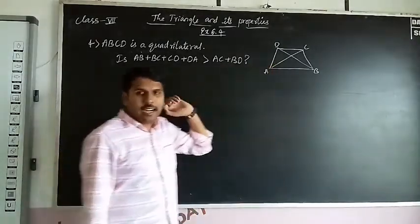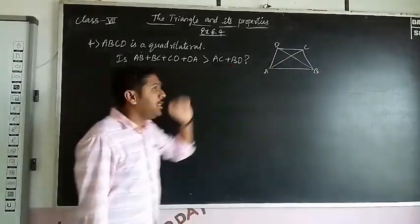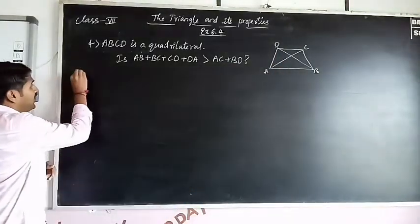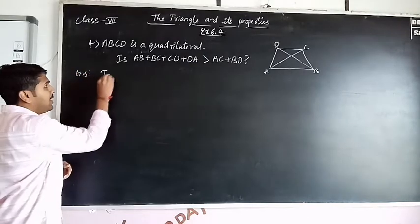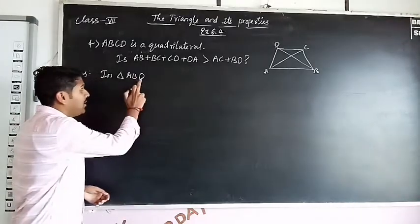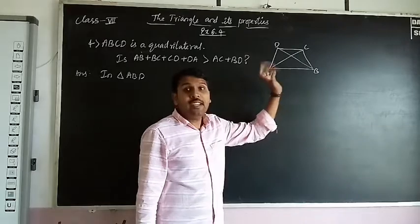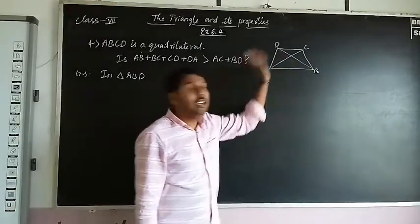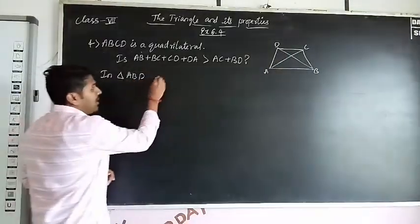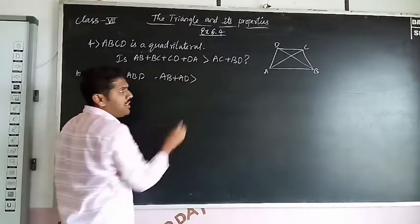First take the triangles. Take the first triangle ABD. In a triangle ABD, what is the triangle inequality property? AB + AD is greater than BD. So this is the first equation.